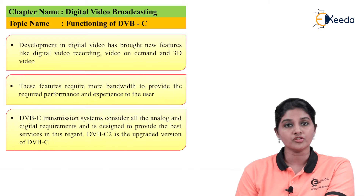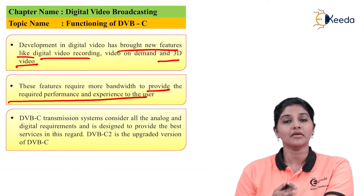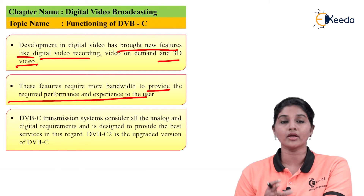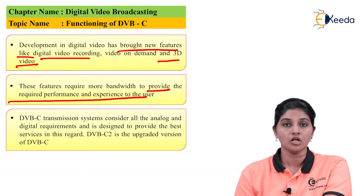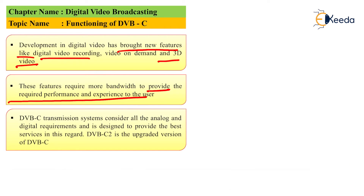Developments in digital video transmission have brought new features like digital video recording, 3D videos, and video on demand, all of which require more bandwidth. To provide a good user experience, it is important to transmit signals without any loss and to maintain good signal quality, requiring maximum bandwidth. The DVB-C transmission system considers all analog and digital requirements and is designed to provide the best services accordingly.